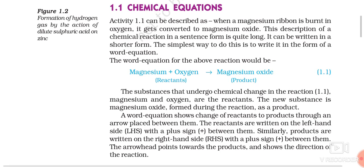Hi, this is Ravi Verma. In my previous video, I discussed about the definition of a chemical reaction — what is a chemical reaction — with the help of a few activities. In this video, we are going to discuss how to represent a chemical reaction. We represent a chemical reaction by the help of chemical equations, which is a way of representing it in a shorter form using symbols of elements and chemical formulae of compounds. So the topic of this video will be chemical equations.